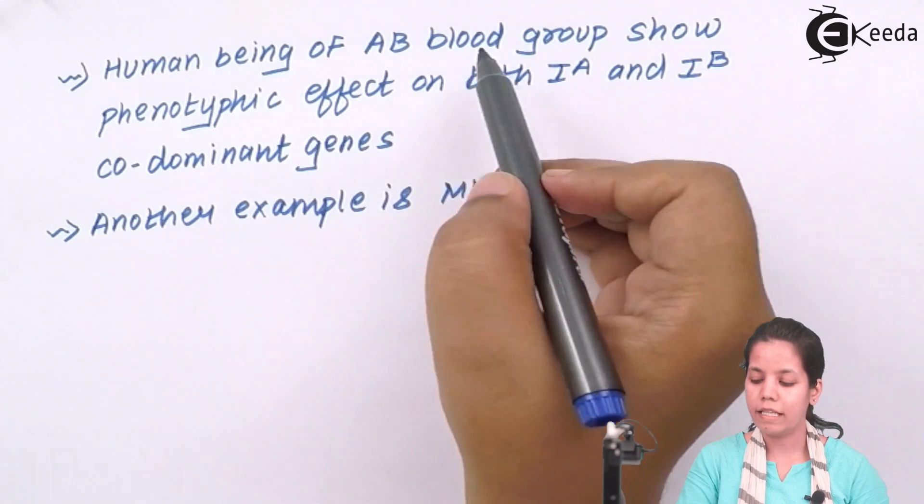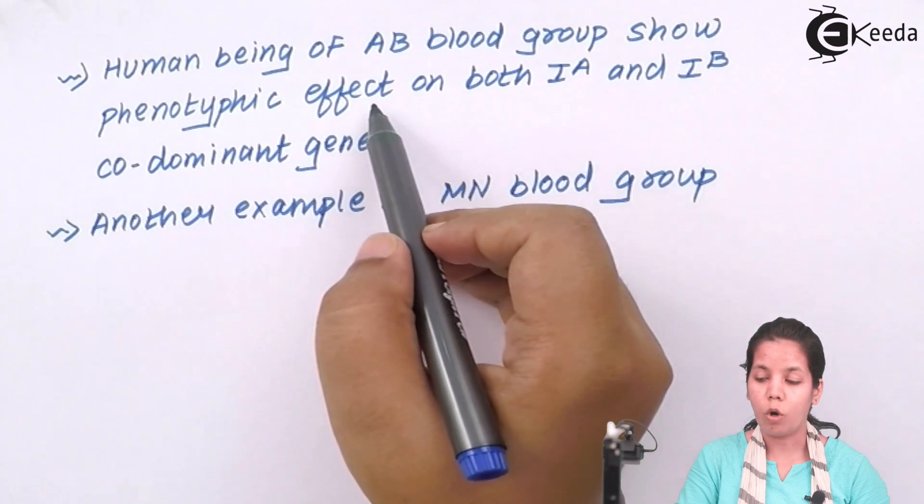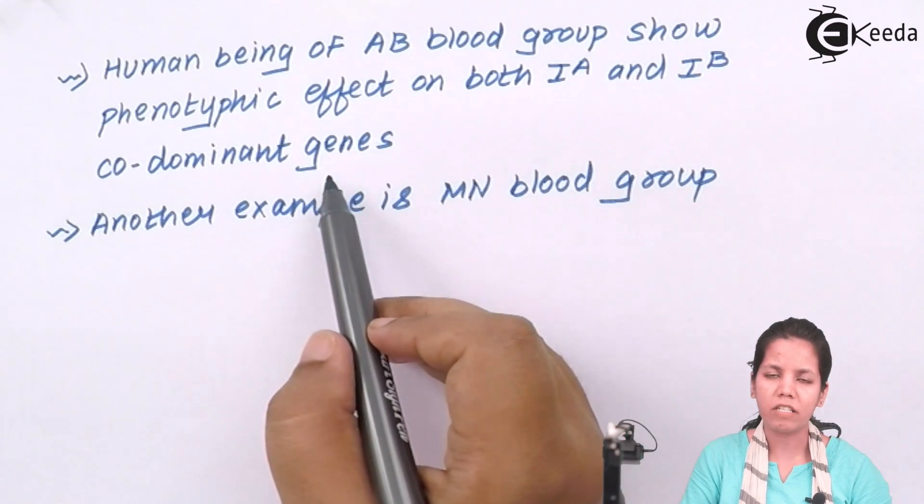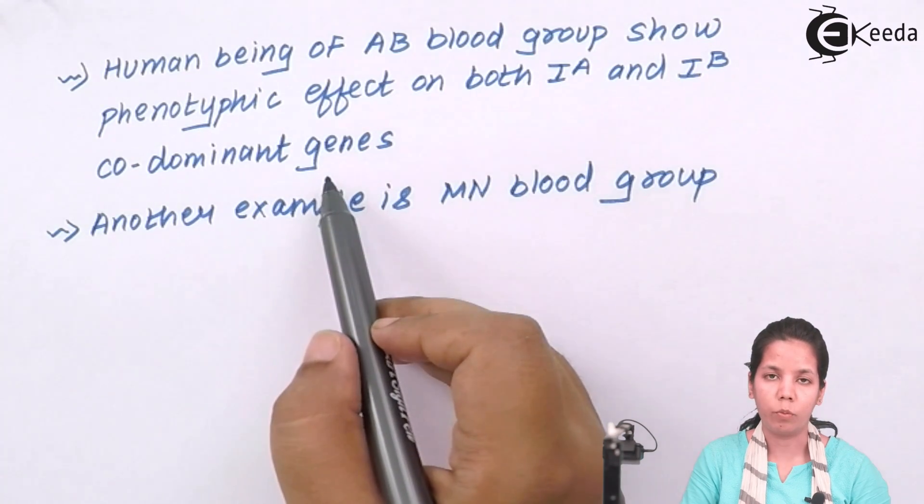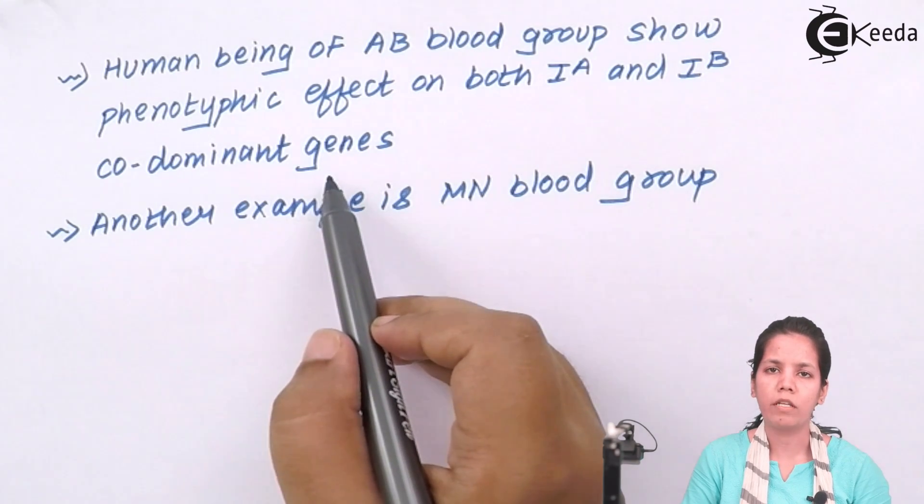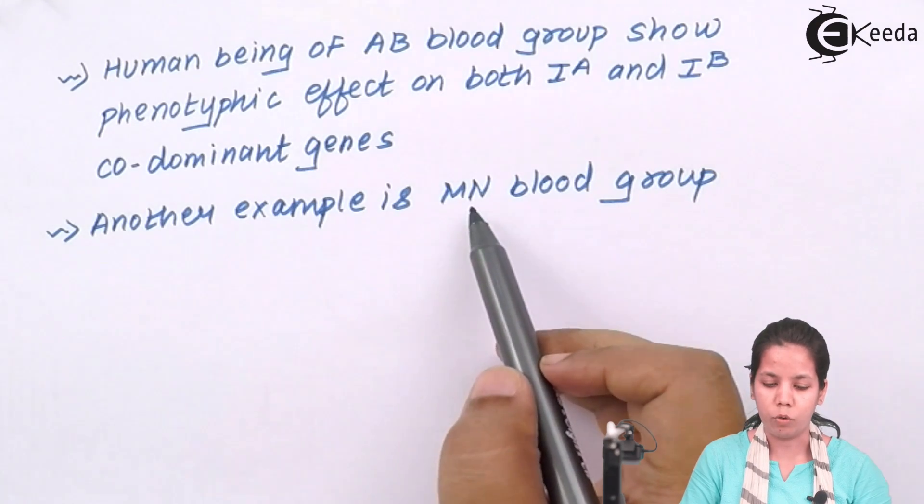In case of human beings, the AB blood group system shows phenotypic effects on both the IA and IB type of codominant genes. We all know that AB is a universal donor, that is it can give to every individual and that is the reason of the codominance of genes. Another example is the MN type of blood group.